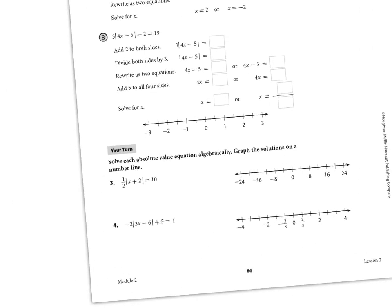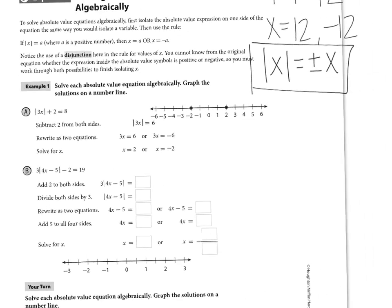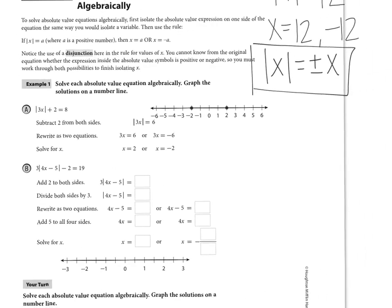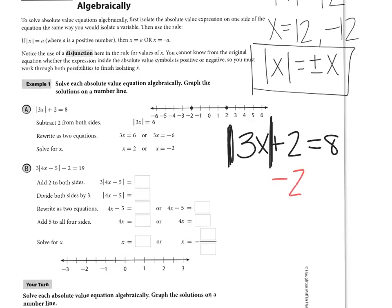So when we look at problems, let's look at A. I'm going to work it out and talk through it with you. A says the absolute value of 3x plus 2 equals 8. If the absolute value of 3x plus 2 equals 8, I need to get this absolute value by itself — just like solving for x normally. I'm trying to isolate the x term. So you're going to subtract 2 from both sides. Minus 2, minus 2, and then I get the absolute value of 3x is equal to 6.